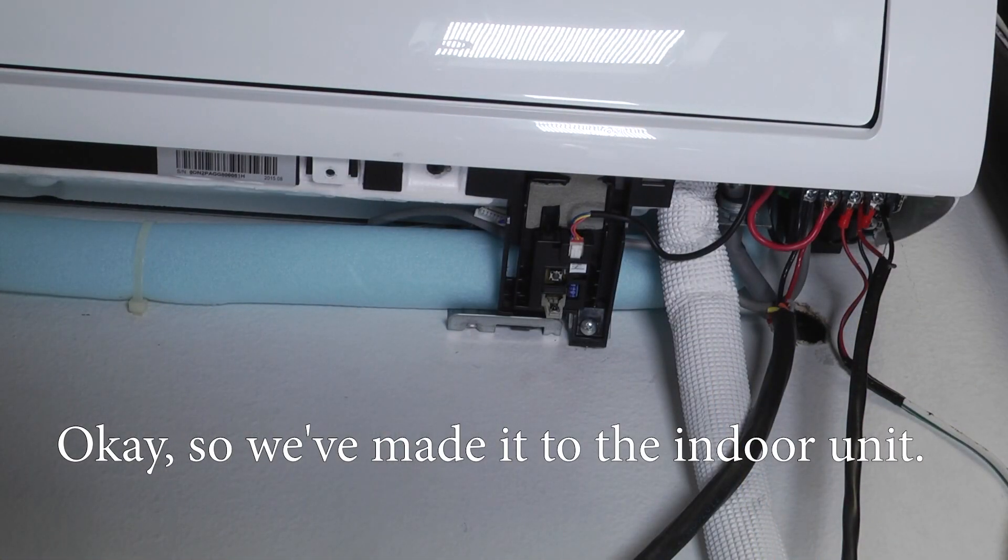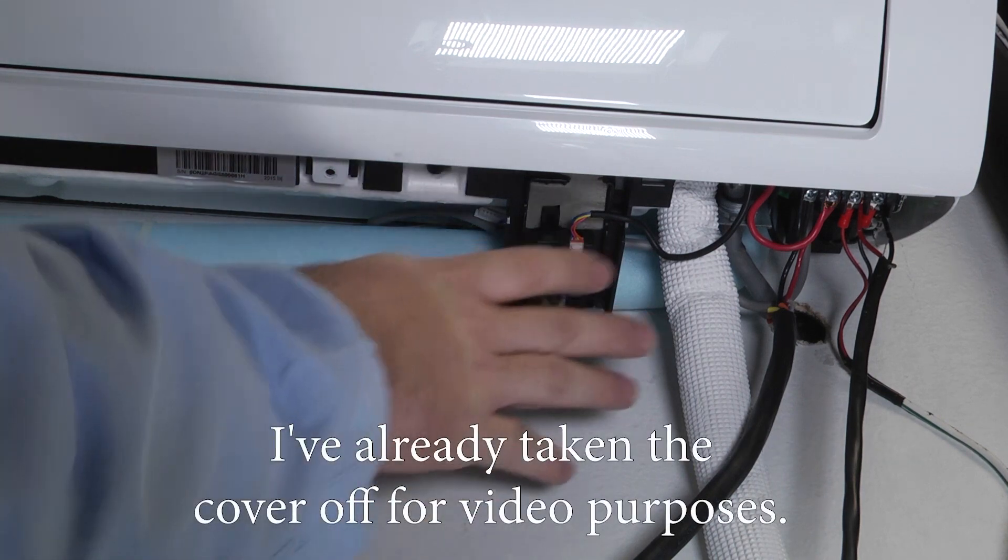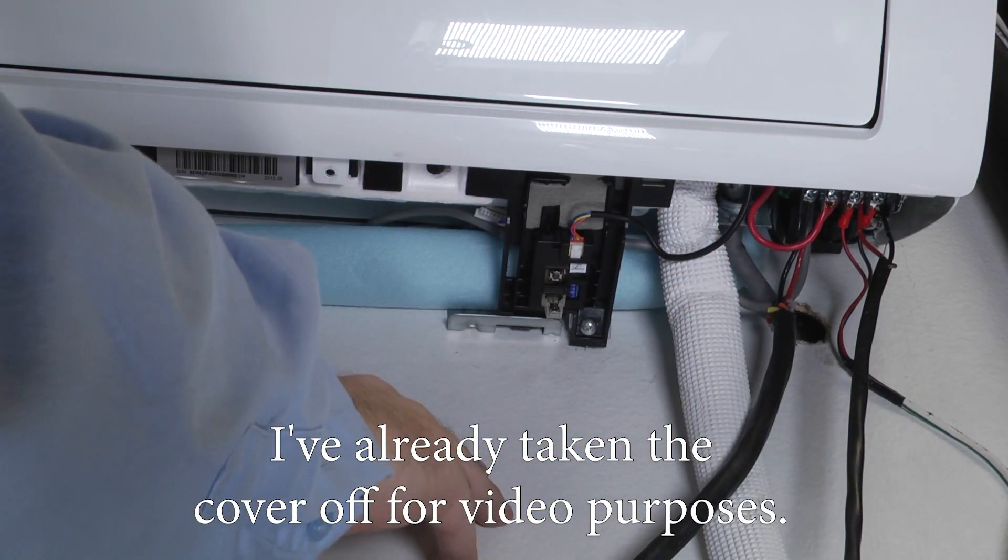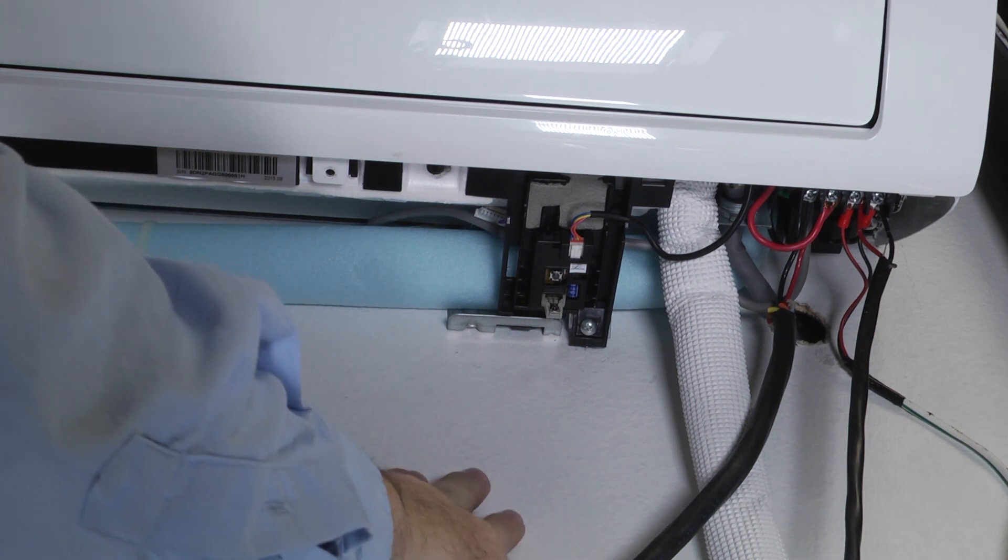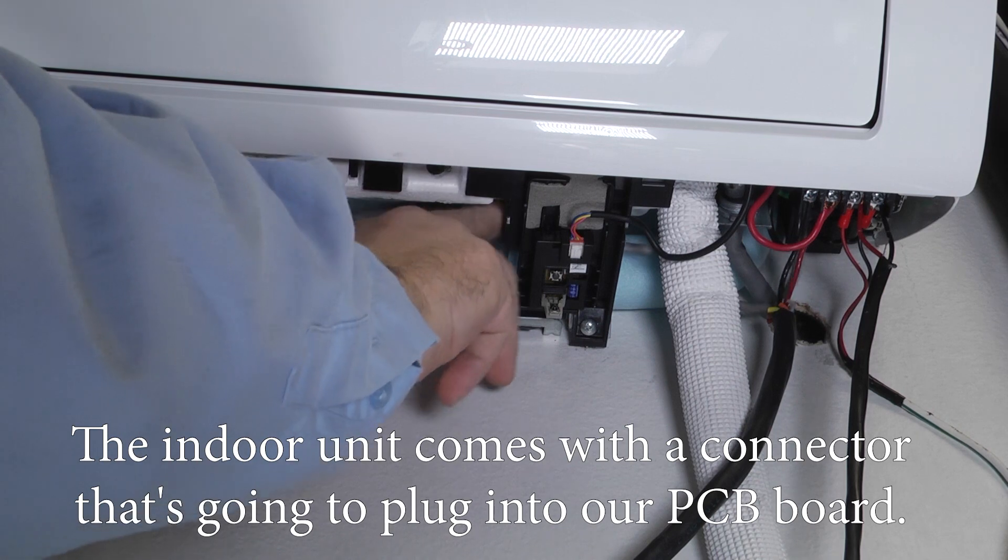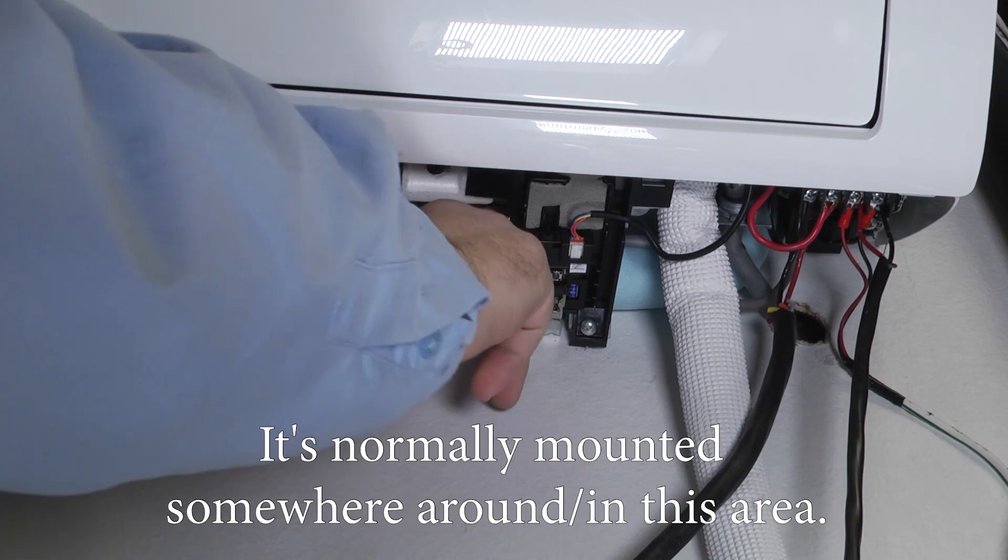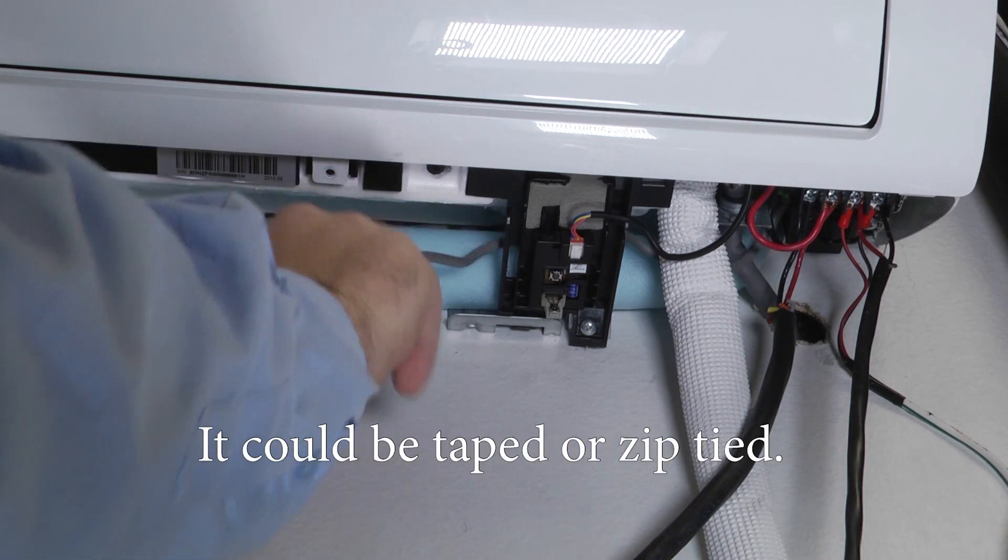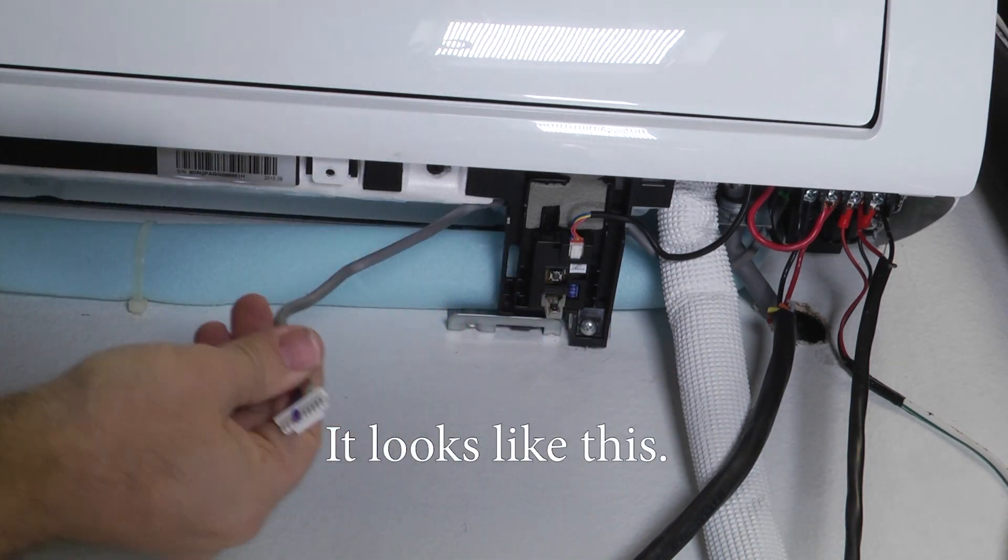Okay, so we made it to the indoor unit. I've already taken the bottom cover off for videoing purposes. The indoor unit comes with a connector that's going to plug into our sub PCB board. It's normally mounted somewhere around in this area. It could be taped or zip tied. It looks like this.